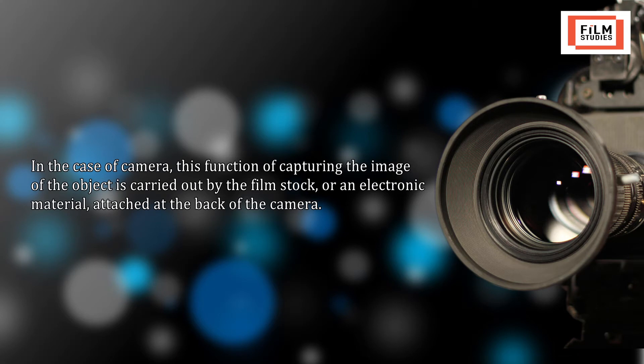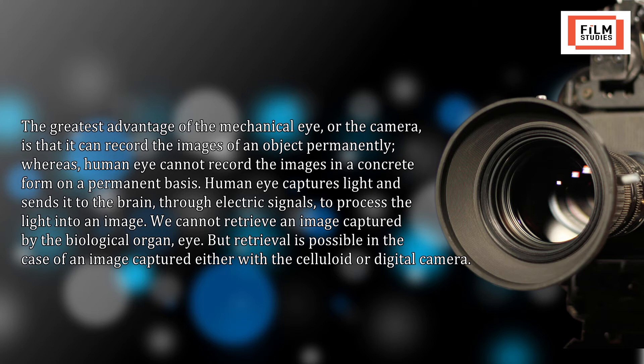In a camera, the function of capturing the image is carried out by the film stock or an electronic material attached at the back of the camera. The greatest advantage of the camera is that it can record images permanently, whereas the human eye cannot. Human eye captures light and sends it to the brain via electronic signals, but we cannot retrieve an image captured by the eye. Retrieval is quite possible with a celluloid or digital camera.